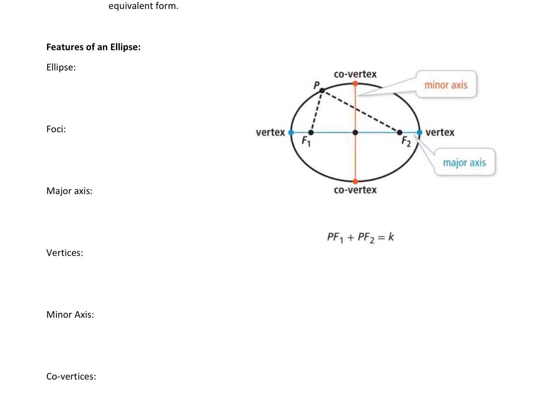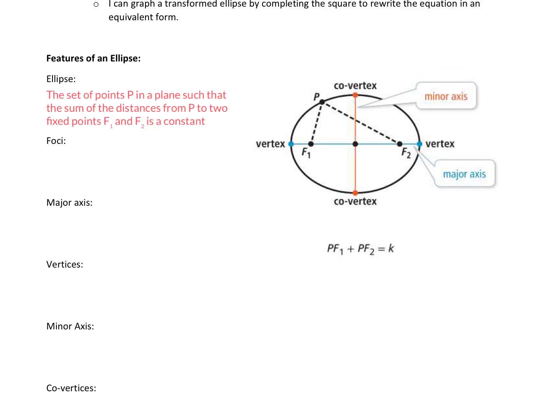First is our definition for ellipse. The set of points P in a plane such that the sum of the distances from any point P to two fixed points, F1 and F2, is a constant. So you can see our picture of an ellipse. Here's F1 and F2, those are fixed points. Any point in the plane where the sum of the distances to F1 and F2 is constant creates an elliptical shape like this.